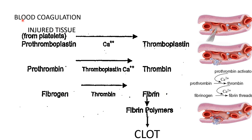Let's see how blood coagulation takes place. If there is an injured tissue — that means a cut — it leads to bleeding. The platelets get activated and release prothromboplastin. Prothromboplastin, in the presence of calcium, gets converted into thromboplastin. This thromboplastin acts as a catalyst and converts prothrombin into thrombin. Thrombin then acts as a catalyst and converts fibrinogen into fibrin, which forms fibrin polymer, leading to clot formation. Fibrin accumulates and forms a seal which stops the bleeding.